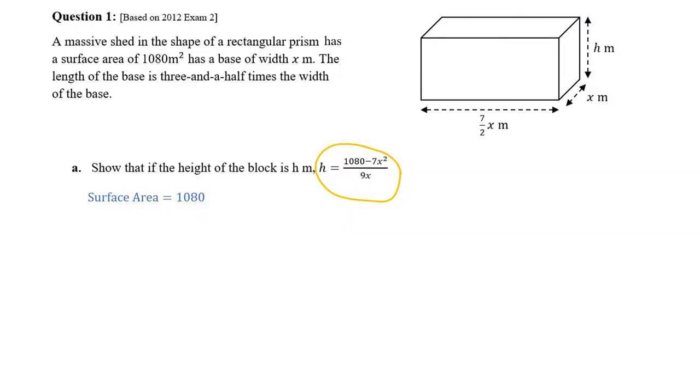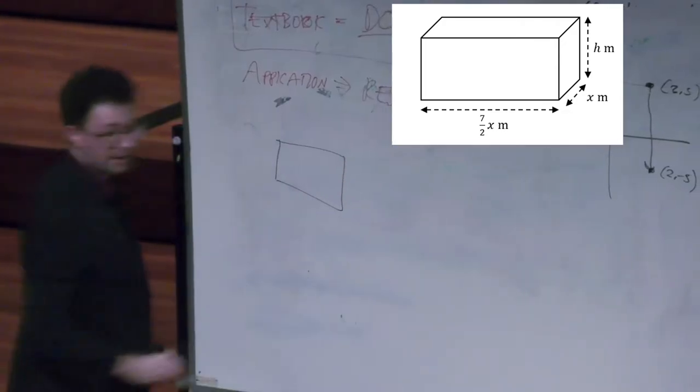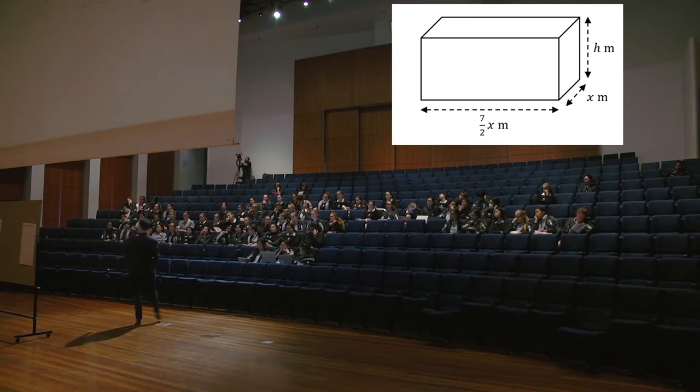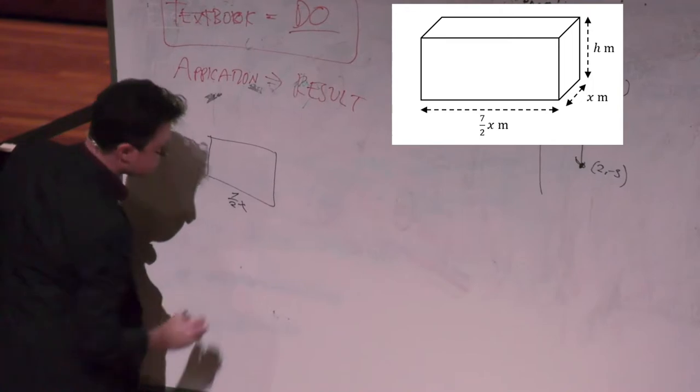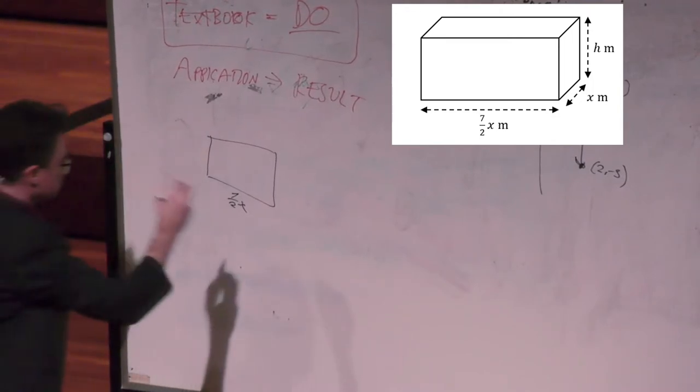We know that the surface area is 1,080. All you really need to do is find the area of each one of the sides. The best way to do this, if you don't know the formula off by hand, is to draw it out. So we've got the front part, where this is 7 on 2x. We've got the height, which is that.